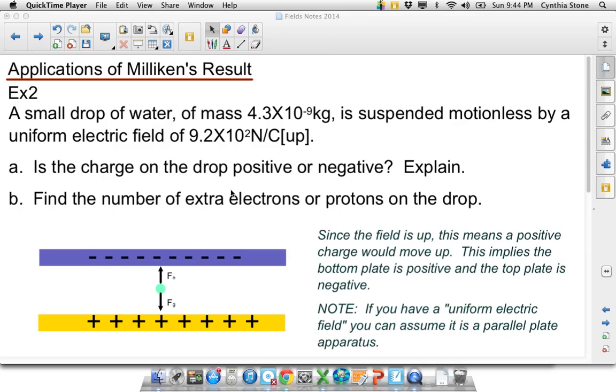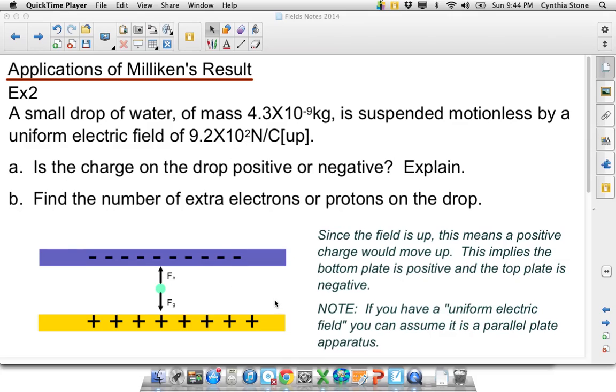If you weren't given the picture, and you're told uniform electric field, you can assume that it's a parallel plate. I never thought of that just now. I mean, I wrote it down way back when, but that's an important point. But yeah, so a positively charged would want to move up. Therefore, it's got to be a positive charge, because the electric force is up.